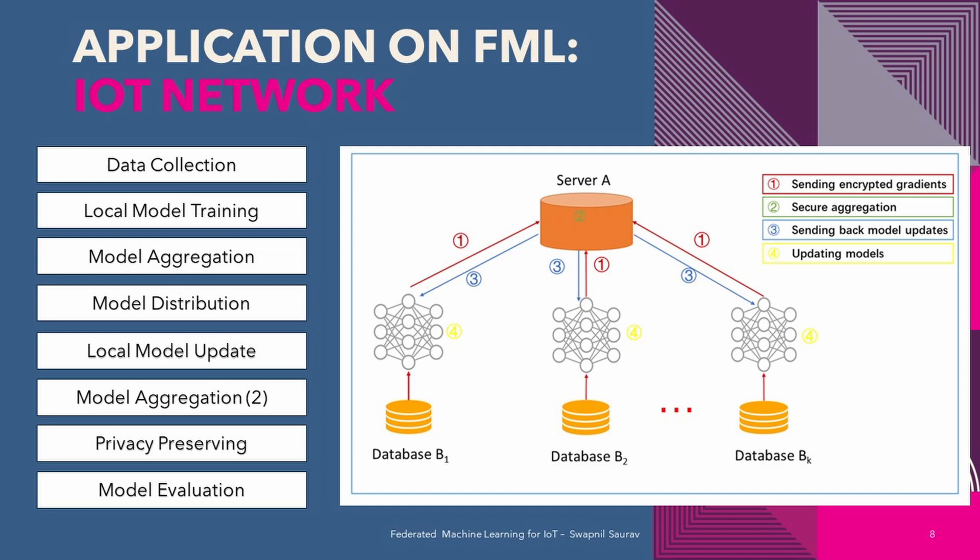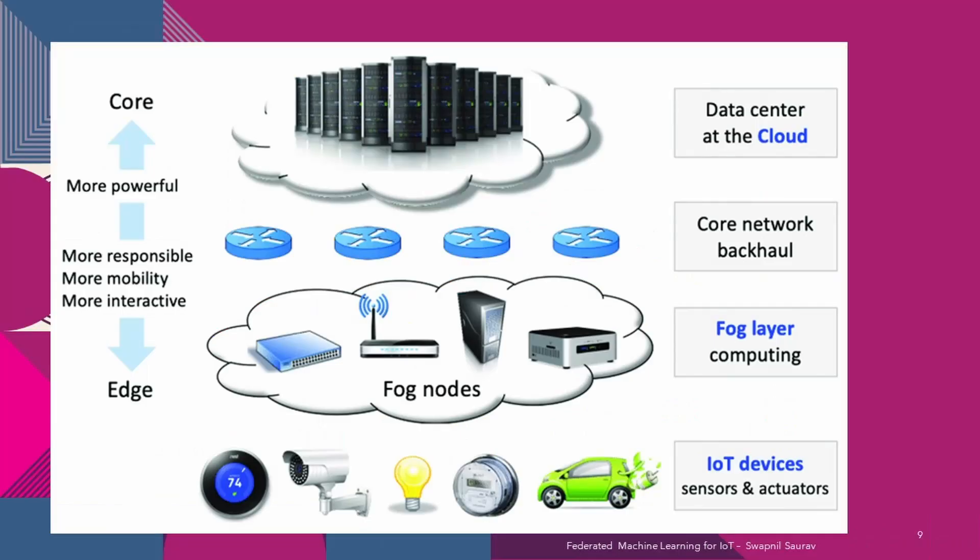The architecture of federated machine learning in IoT consists of three layers: the edge layer, the fog layer and the cloud layer, each with a specific role. The edge layer consists of edge devices such as sensors, actuators and control systems. These devices collect and process data locally, allowing for real-time decision making and reducing latency. In the context of FML, edge devices also participate in the training and inference of machine learning models. Edge devices can perform pre-processing and feature extraction from raw sensor data, enabling them to send only relevant information to the higher layers.